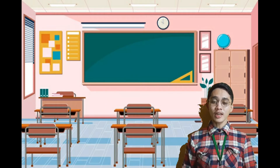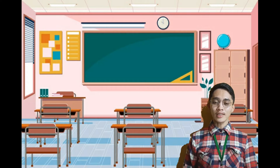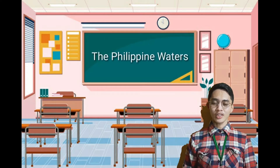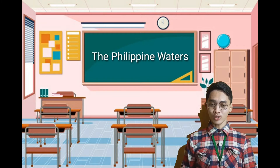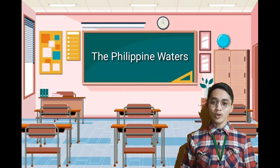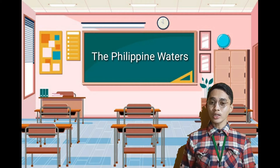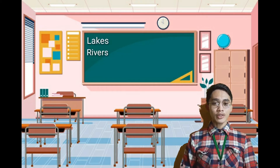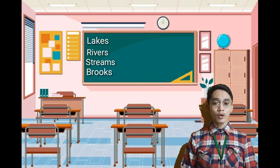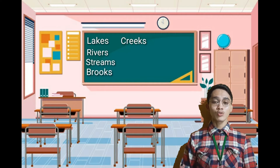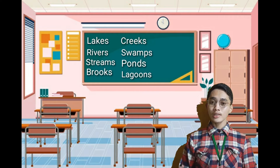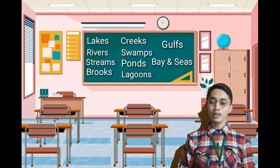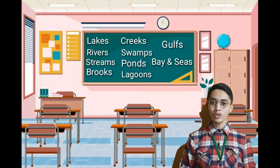So let's proceed to our topic for today. Our topic for today class is what we call the Philippine Waters. Did you know the definition of Philippine Waters? All bodies of water have different territories. They include lakes, rivers, streams, brooks, creeks, swamps, ponds, lagoons, gulfs, bays, and seas. Those are the different forms of water in the Philippines.